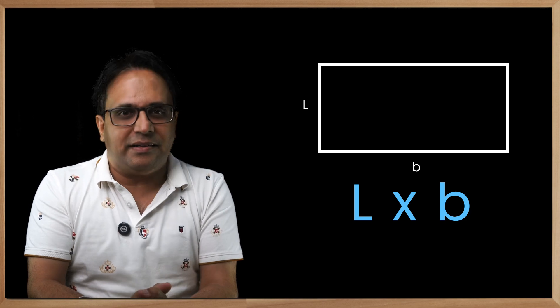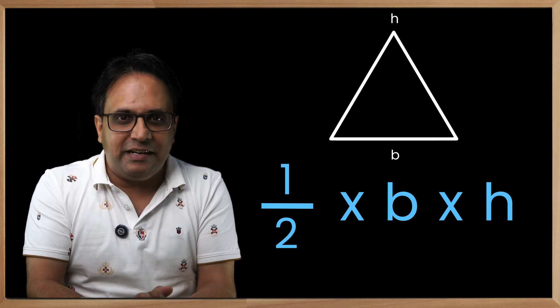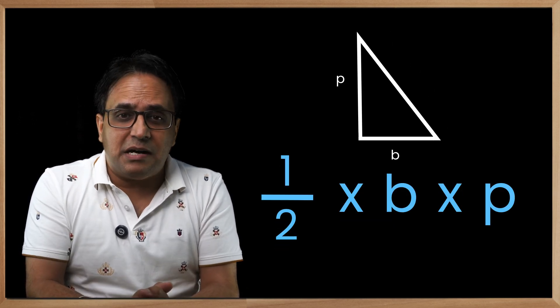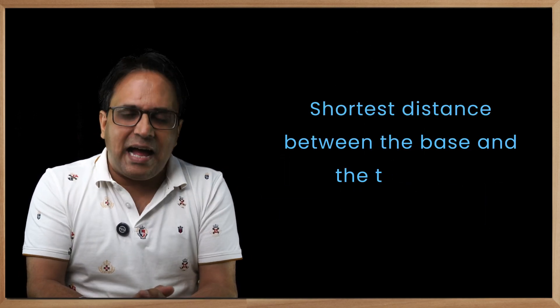Likewise, if we talk about triangles, we have ½ × base × height. If it is a right-angle triangle, the area becomes ½ × base × perpendicular. For the rest, it is the shortest distance between the base and the top apex.